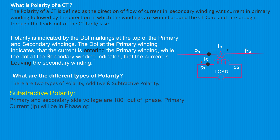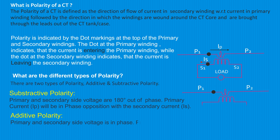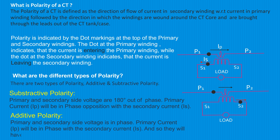In subtractive polarity, the primary current Ip will be in phase opposition with secondary current Is. In additive polarity, the primary and secondary voltage is in phase, and primary current Ip will be in phase with the secondary current Is, so they will have the same direction of flow.